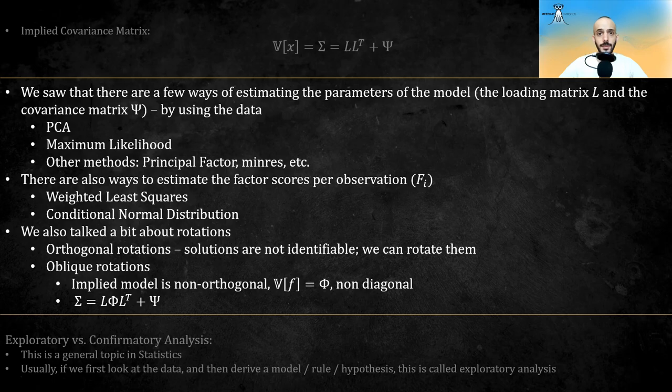We also talked a bit about rotations. There are orthogonal rotations, which are justified by the fact that the solutions are not identifiable. We can rotate them to find better representations. And there are also oblique rotations, for which the implied model is non-orthogonal. There is a covariance matrix for the factors, which is not diagonal. The implied covariance now looks like this.